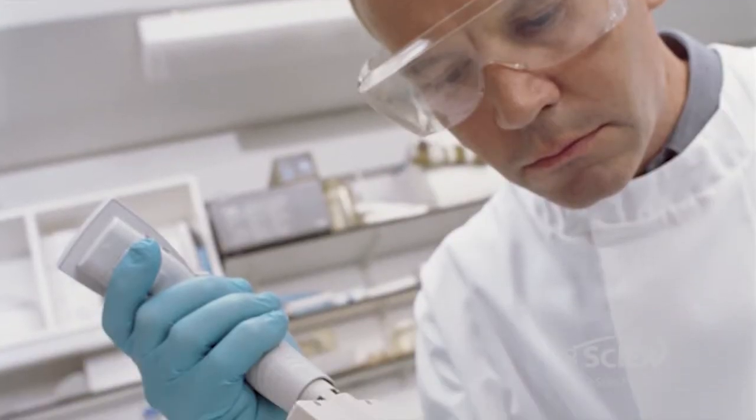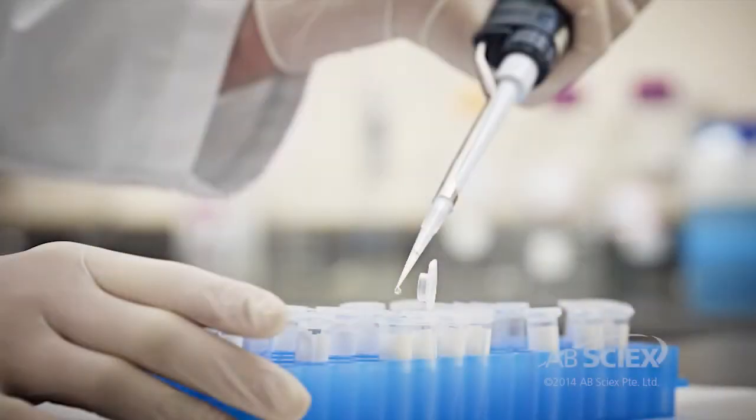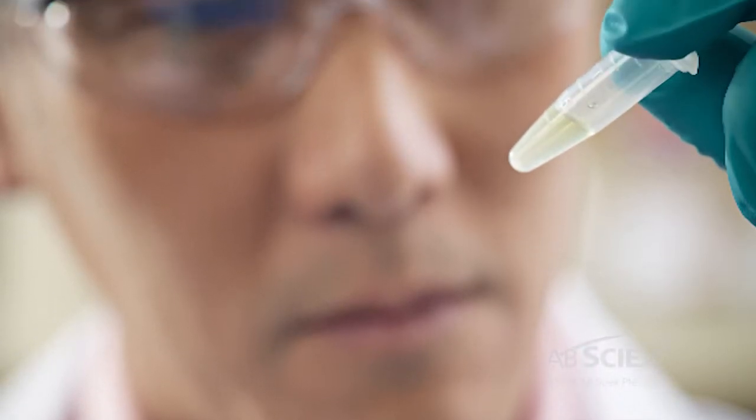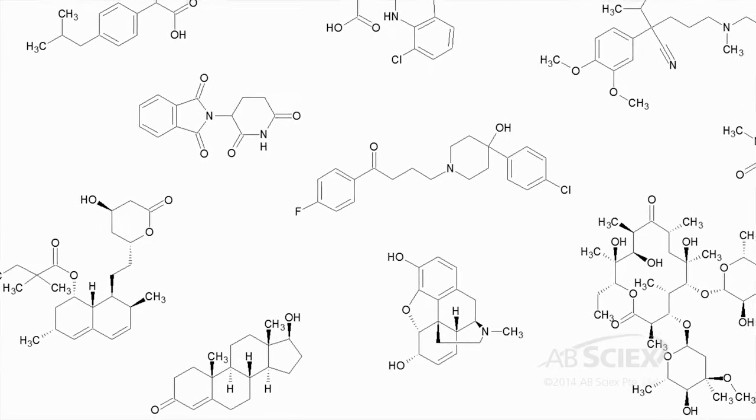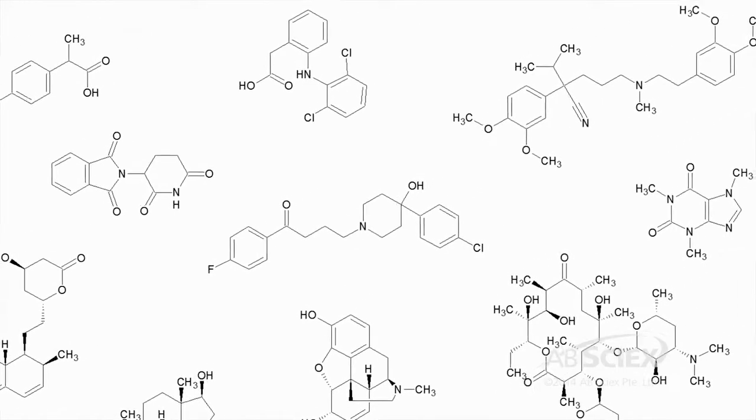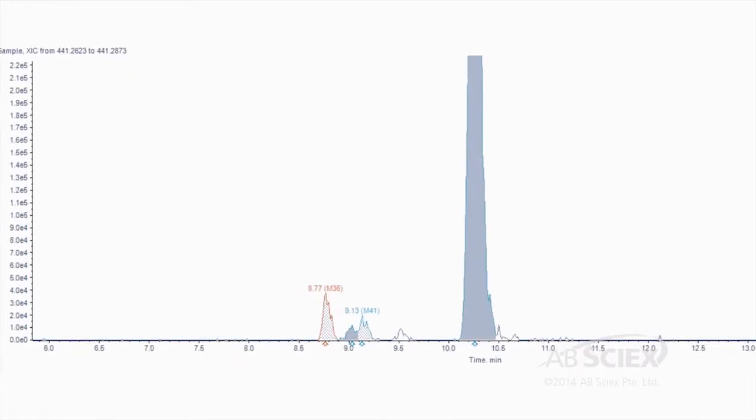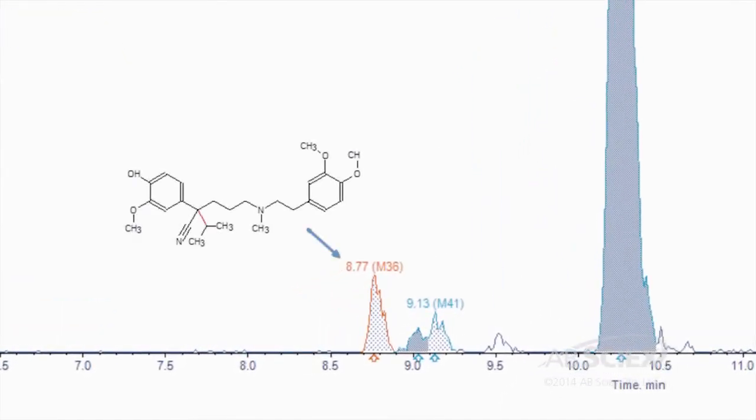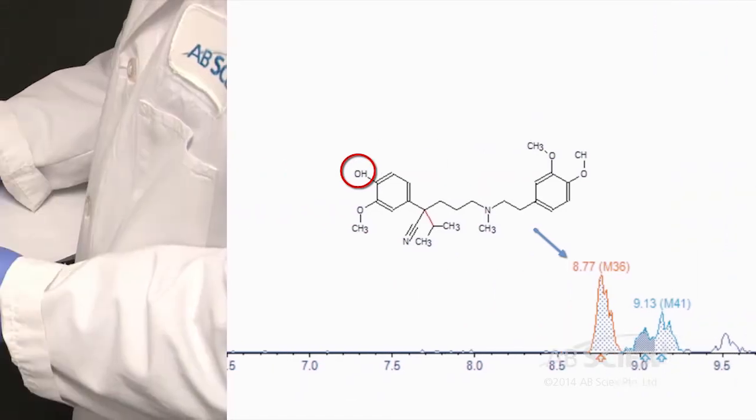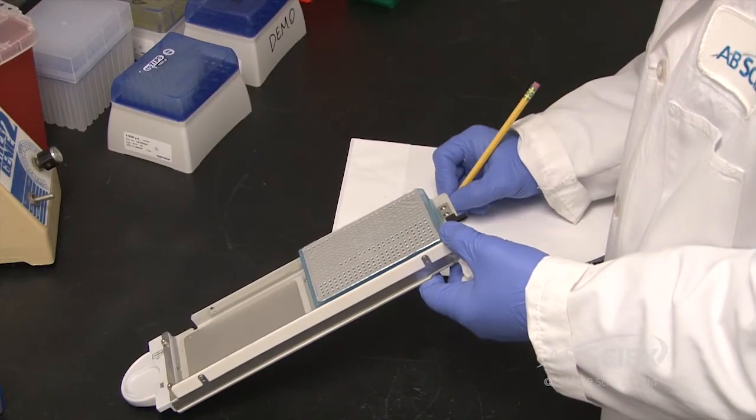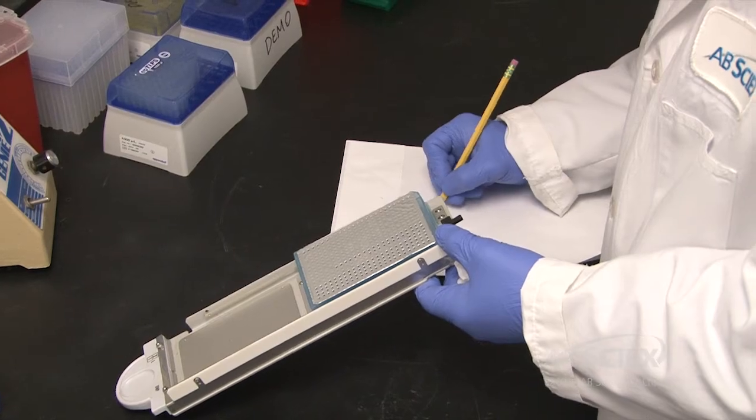The metabolite ID process involves incubating new chemical entities with hepatocytes or purified hepatocyte subcellular fractions in vitro. Fractions are monitored over time for disappearance of drug and metabolites. Analytical challenges faced by met ID scientists are the need for accurate and reliable metabolite structure confirmation, detecting low concentrations of drug and metabolites in the presence of complex matrices, and large numbers of samples, especially for high throughput discovery labs.